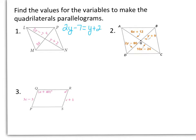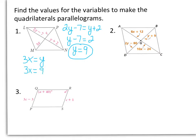Let's go ahead and solve this equation for y. Subtracting y, we have y minus 7 equals 2. Then add 7, we get y equals 9. Our other equation says 3x equals y. We just found y to be 9, so substituting in: 3x equals 9, and x equals 3.